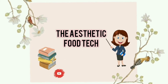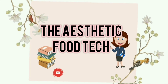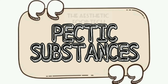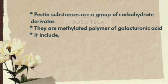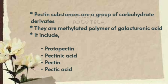Welcome to Aesthetic Food Tech. Today we are going to discuss pectic substances in food chemistry. Pectic substances are derivatives of carbohydrates, or in other words, they are methylated polymers of galacturonic acid. They are especially present in the primary cell wall and middle lamellae of fruits and vegetables. Pectic substances include four types: protopectin, pectinic acid, pectin, and pectic acid.